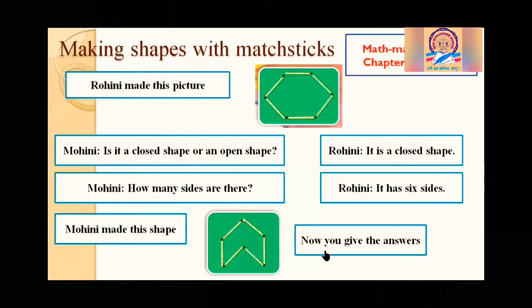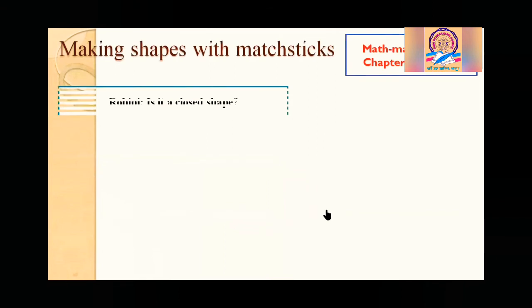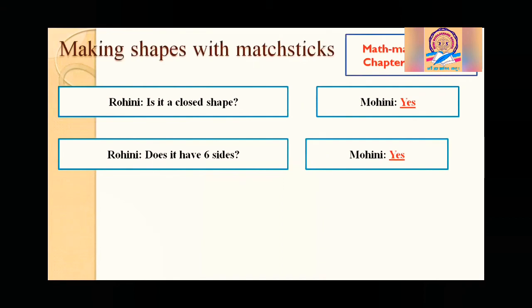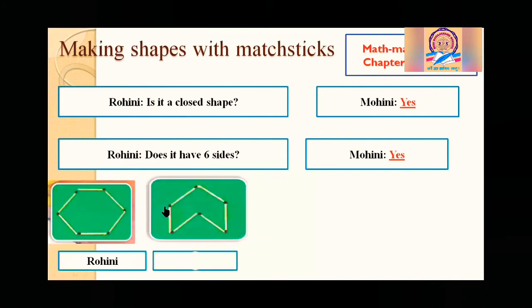Now, you give the answer. See here, Rohini. Now Mohini is asking to Rohini. Rohini, is it a closed shape? Mohini says yes, I have also made the closed shape. Rohini, does it have six sides? Mohini says yes, it has six sides. Look at this, Rohini's picture, Rohini's shape. Mohini's shape. Both are of six sides, but they are not similar.